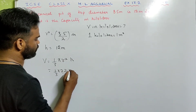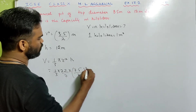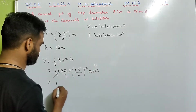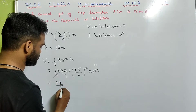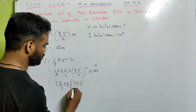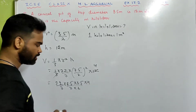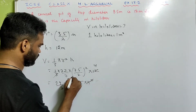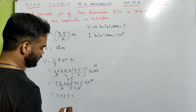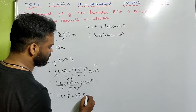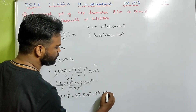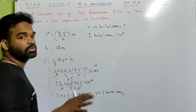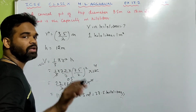We find the volume using the formula: one-third pi r square h. That is one-third × 22/7 × (3.5/2)² × 12. Solving: 22/7 × 3.5 × 3.5 / 4 × 12 simplifies to 11 × 3.5 = 38.5 meter cube. The answer is 38.5 kilolitres, since 1 kilolitre = 1 meter cube. This is a simple application of the formula one-third pi r square h.